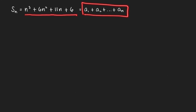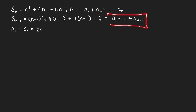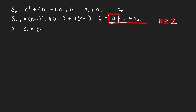Our first step is to find a formula for the nth term of the sequence, a sub n. To find that, we look at the sum of the first n minus 1 terms, which equals this expression. Note that this sum holds only for n greater than or equal to 2, because we start with a sub 1 and end with a sub n minus 1.